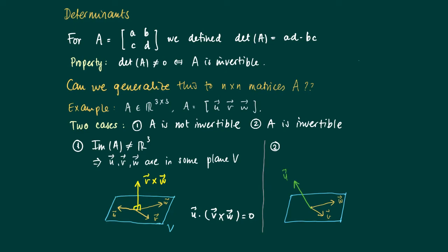For the second case we have that A is invertible. The cross product of V with W is not orthogonal to the vector U. If we consider a plane where V and W are in, the vector U is pointing outwards.